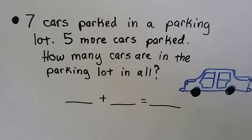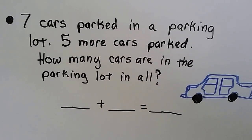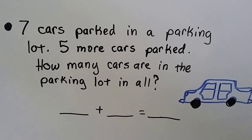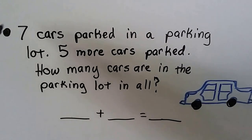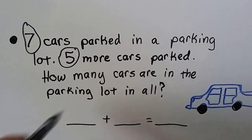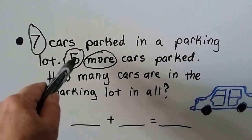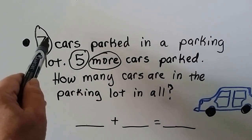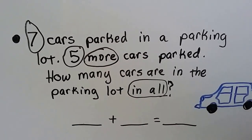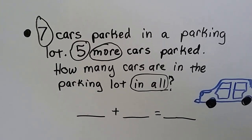Seven cars parked in a parking lot. Five more cars parked. How many cars are in the parking lot in all? Let's circle our important information: we have a seven, we have a five, and it says 'five more' — that means we're adding five more to the seven. And it says 'in all.' So we have two clue words, 'more' and 'in all,' that tell us we're adding.